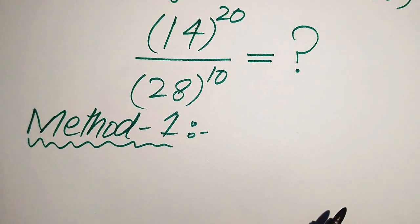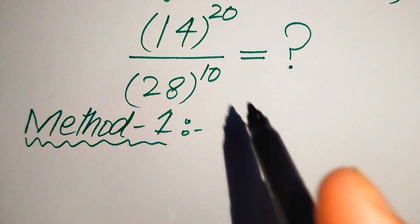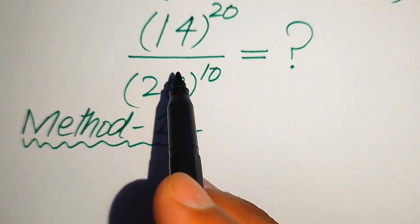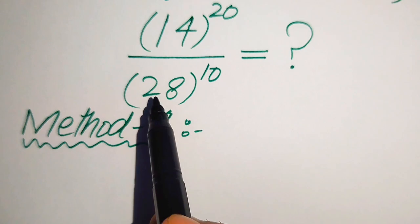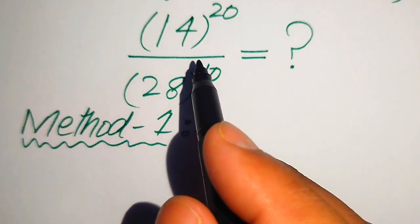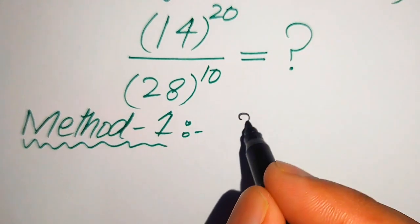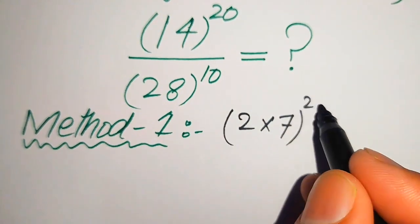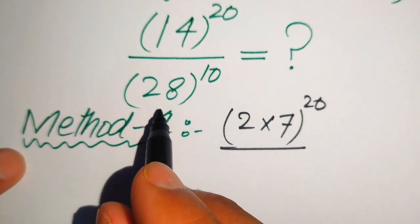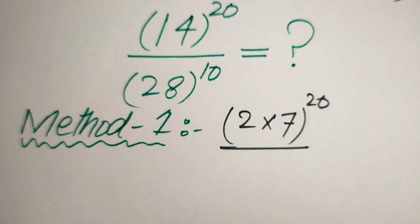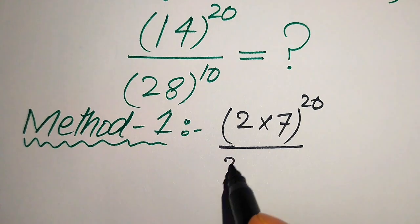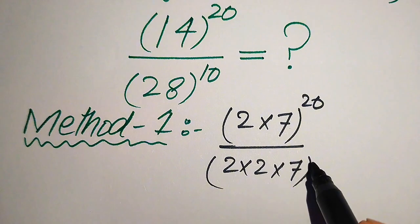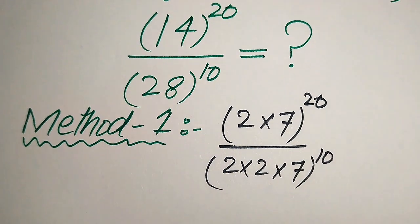In the first method, we focus on the bases of these terms and break them into prime factors. The prime factors of 14 are 2 multiplied by 7, with the whole raised to the power of 20. The prime factors of 28 are 2 multiplied by 2 multiplied by 7, with the whole raised to the power of 10.